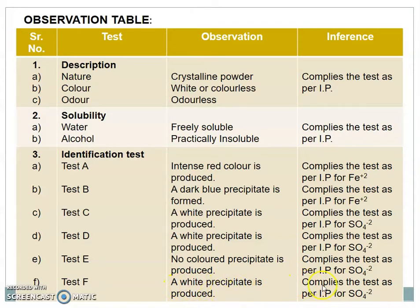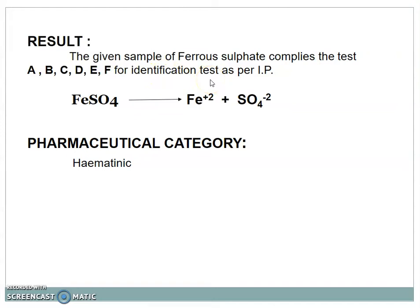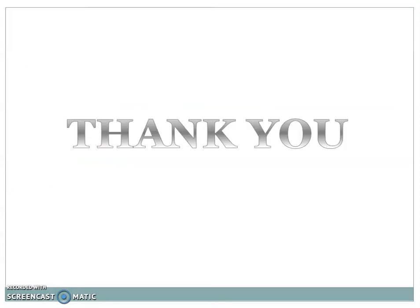Test F: a white precipitate is produced; complies as per Indian Pharmacopoeia for sulfate ions. Result: the given sample of ferrous sulfate complies with Tests A, B, C, D, E, and F for the identification test as per IP. FeSO₄ gives Fe²⁺ and SO₄²⁻ ions. The pharmaceutical category of ferrous sulfate is hematinic; it is used to treat anemia. Thank you for attending and watching this video.